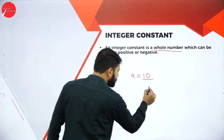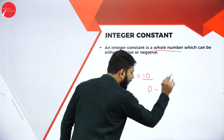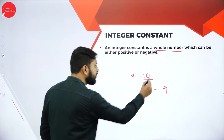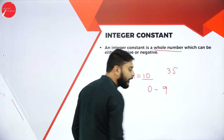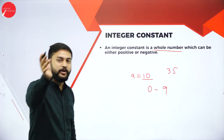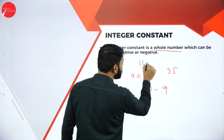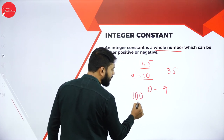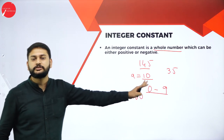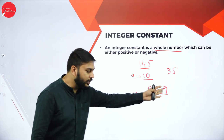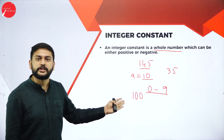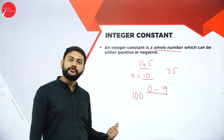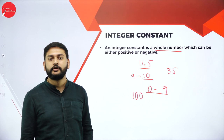The first type of constant is the integer constant. An integer is any whole number, either positive or negative, made up of digits 0 to 9. For example, 35, 145, and 100 are all integers because they are combinations of digits 0 to 9. This is what we call an integer constant.